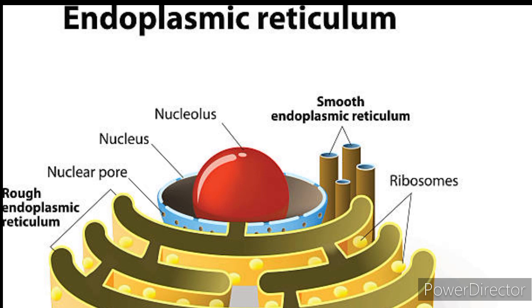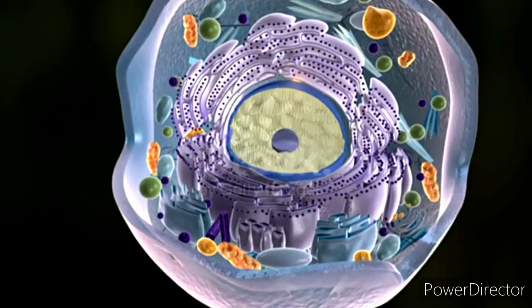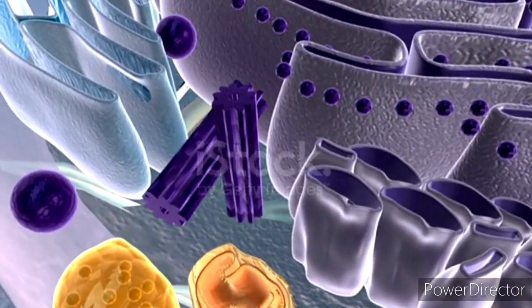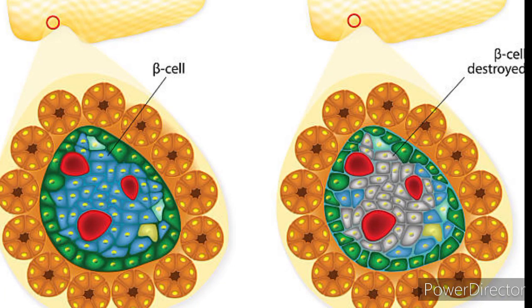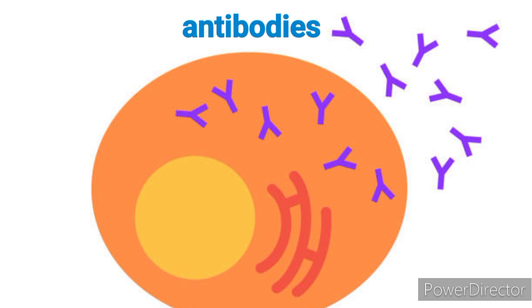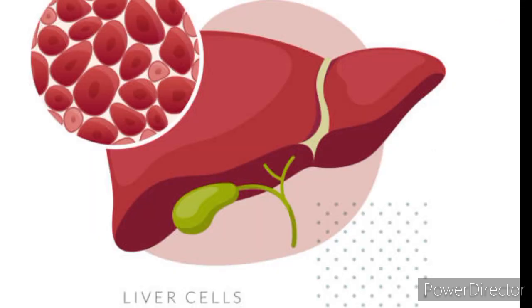The rough endoplasmic reticulum is prominent in cells that are actively involved in protein synthesis and secretion, such as pancreatic cells producing digestive enzymes or plasma cells generating antibodies. Meanwhile, cells involved in lipid metabolism, like liver cells, have a more developed smooth ER.